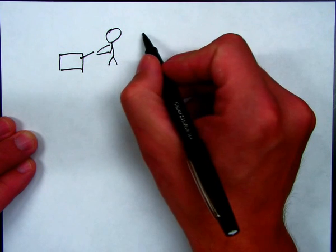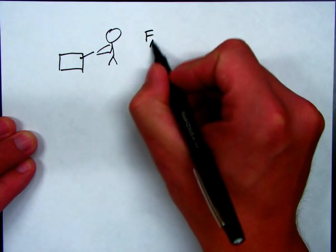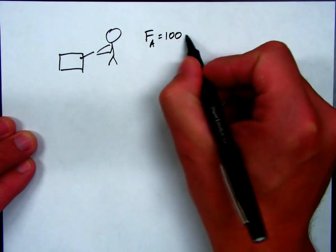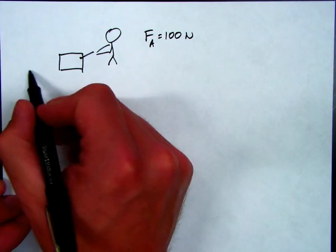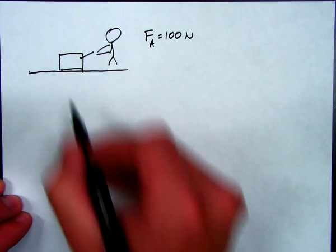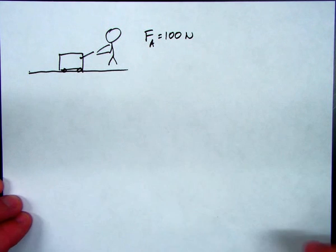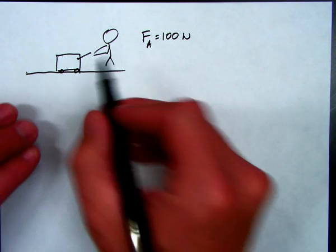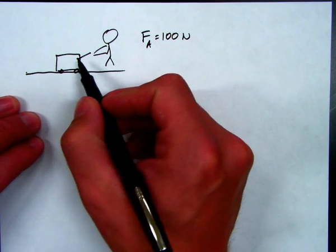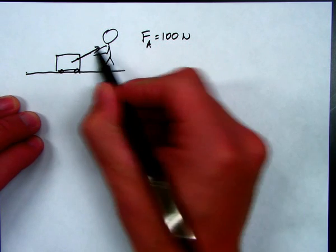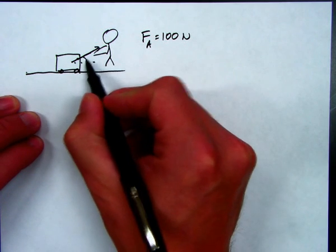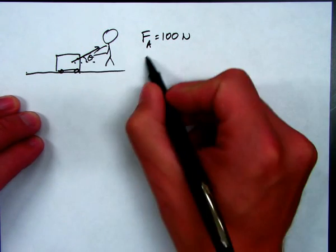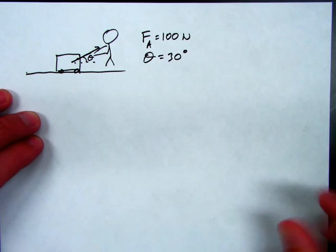And like last time, we can say that the applied force is 100 Newtons and the block will slide along the ground. For now, let's put wheels on it. We'll ignore friction. Well, this angle, we have to make up an angle here. Let's say that this applied force is happening at an angle of theta, where theta is 30 degrees above the horizontal.